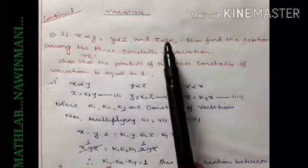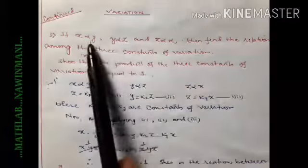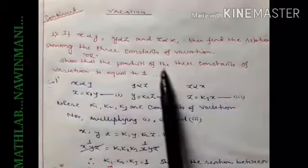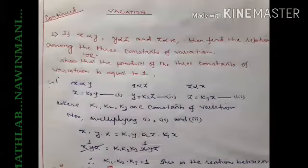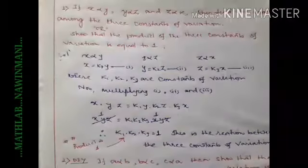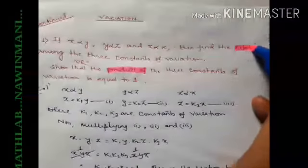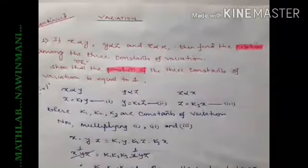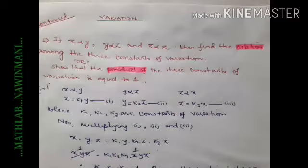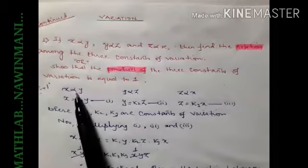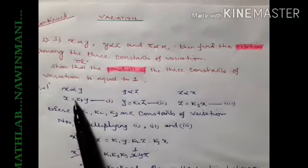There are two types of questions you may get: either find the relation between k1, k2, and k3, or show that the product of the three constants is equal to one. Now, what we are going to do is take the first variation, convert the variation into an equation, and introduce one constant k1.